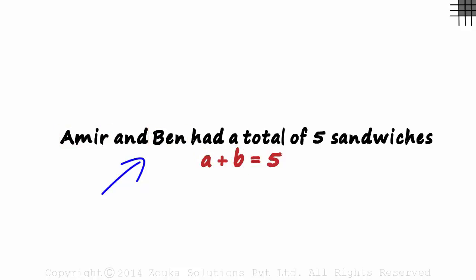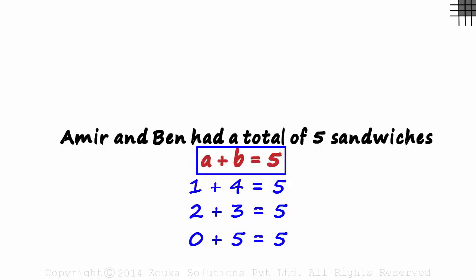With just this information, will we be able to tell the number of sandwiches each of them had individually? Well, we cannot. It can be 1 plus 4 or 2 plus 3 or 0 plus 5 maybe. The point is that there are multiple possibilities if we have just this equation.